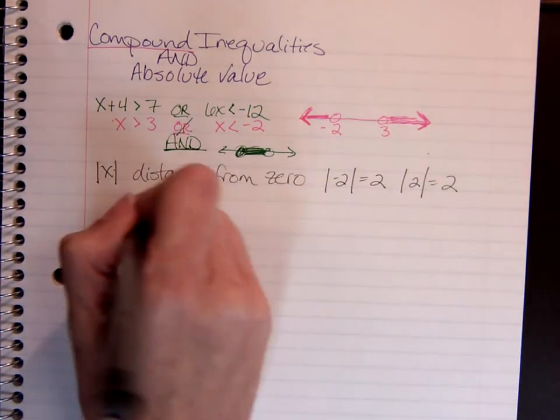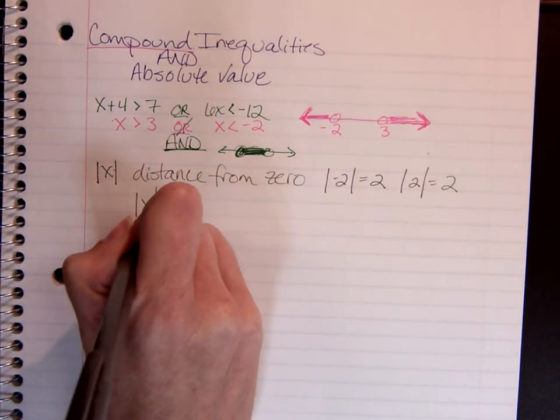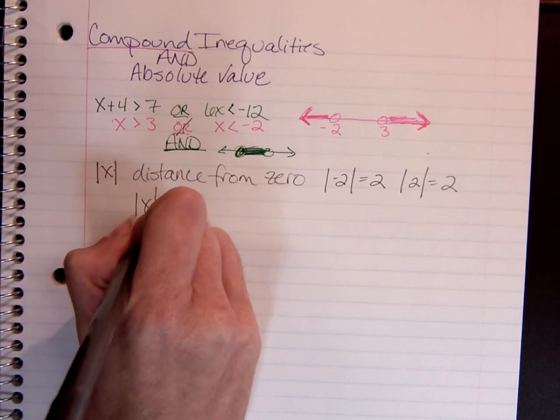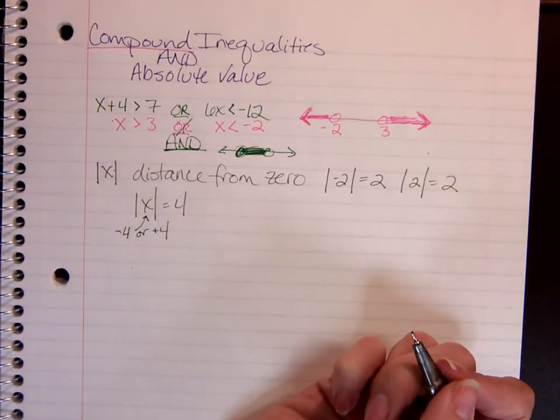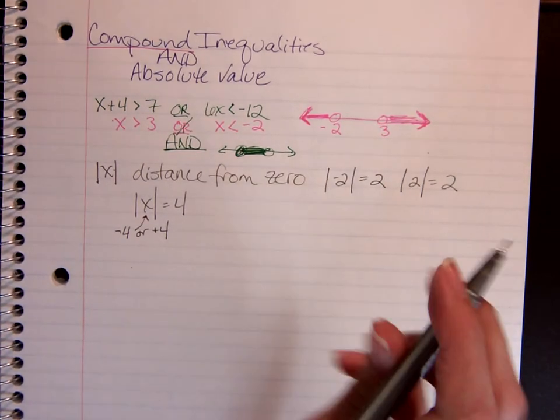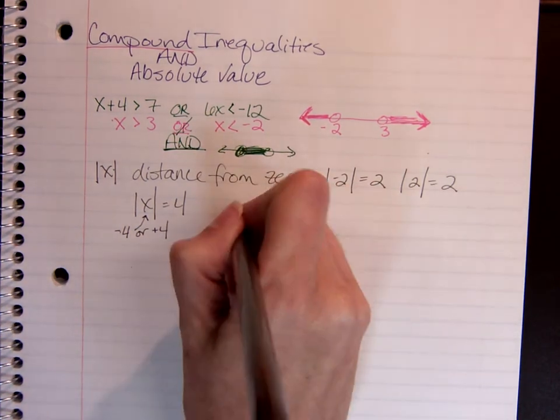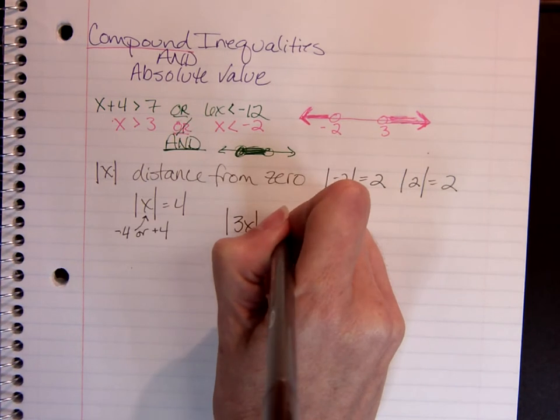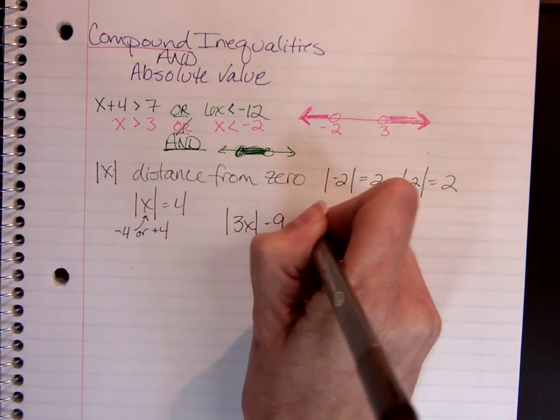So that if I have absolute value of x equals 4, then I know that whatever went in here, it could have been either negative 4 or positive 4. So we're looking at two possible answers every time we start solving absolute value equations. So we'll take, for example,